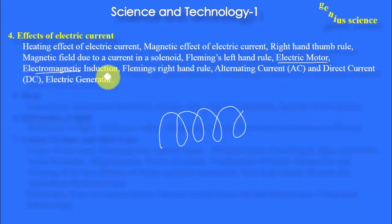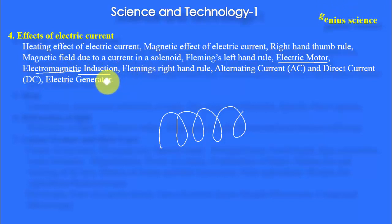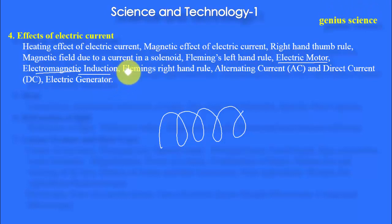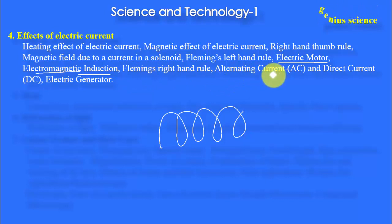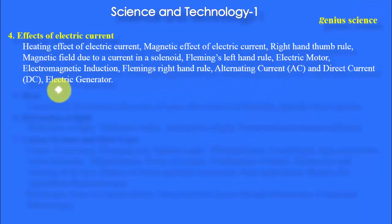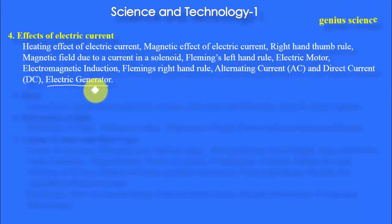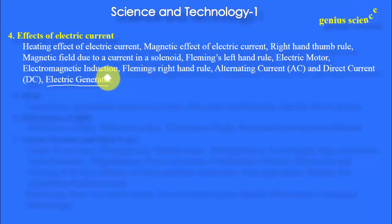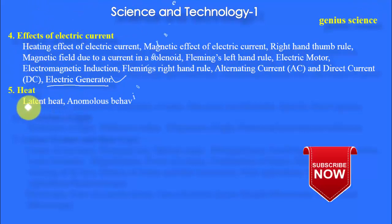Then electromagnetic induction, mutual induction, and self-induction. Then Fleming's right-hand rule, alternating current (AC) and direct current (DC), and electric generator. This electric generator is also very important and it is also part of the 12th class syllabus. The next chapter is Heat.